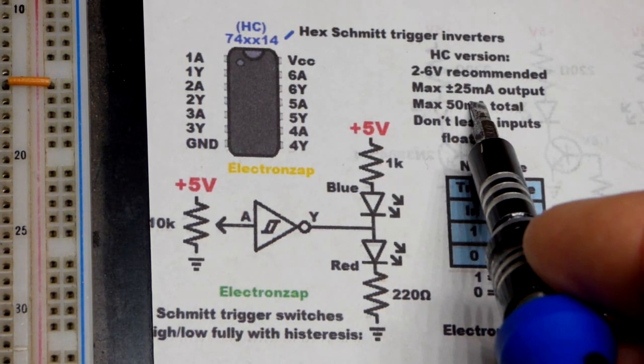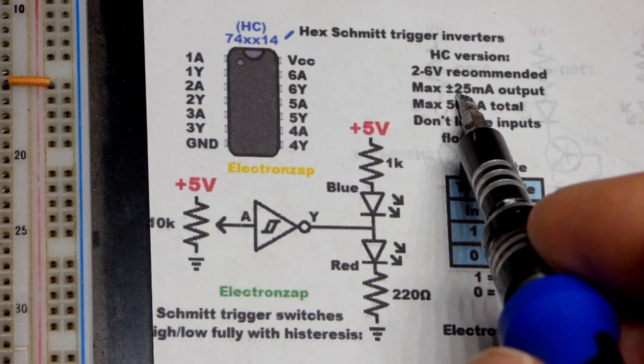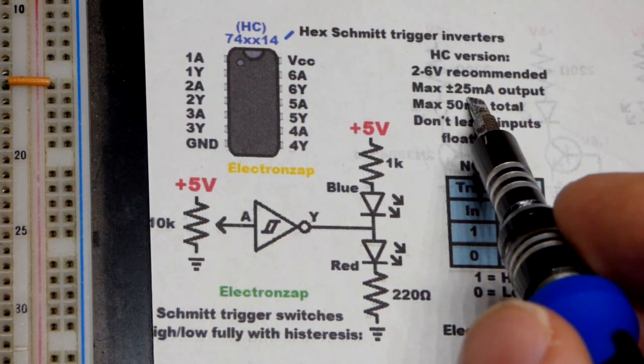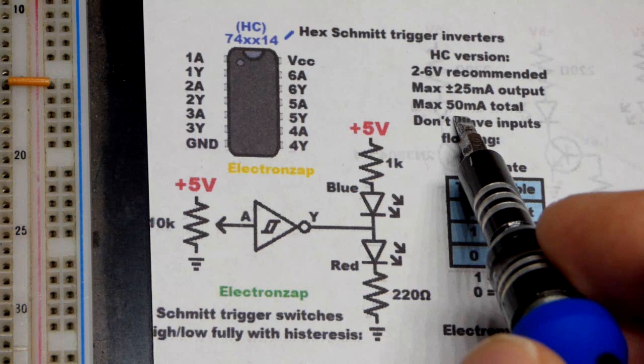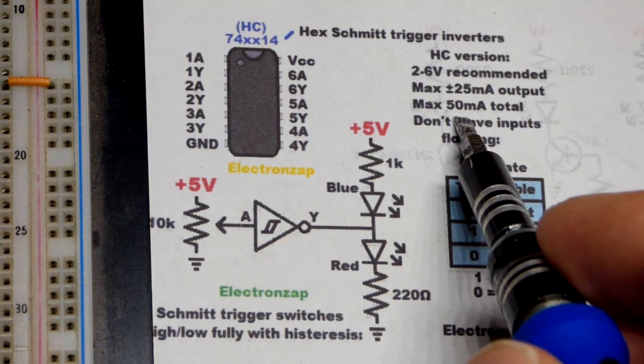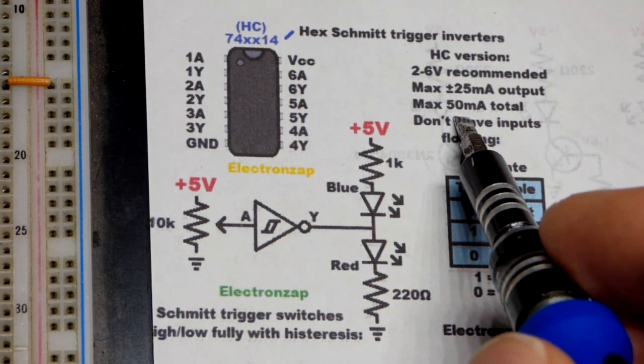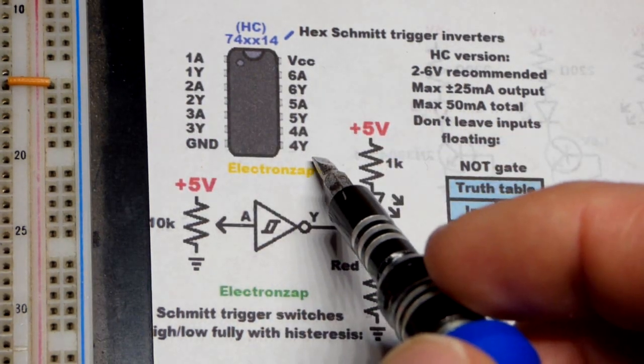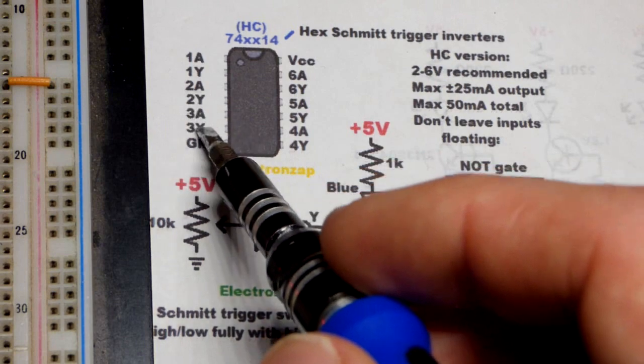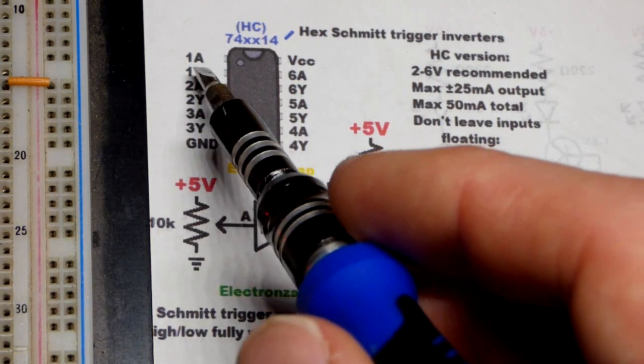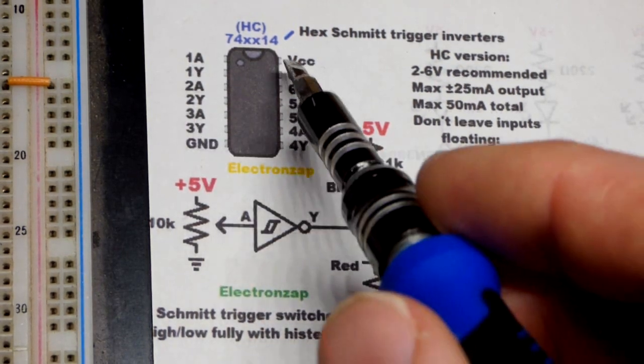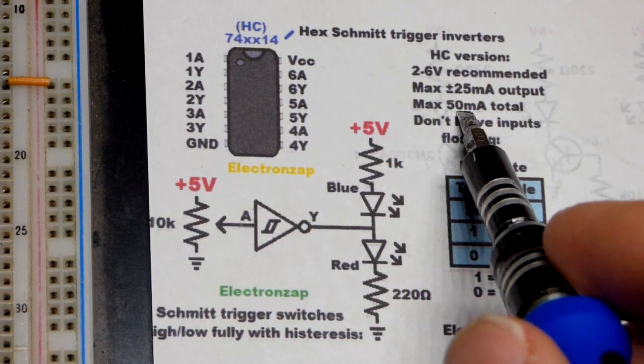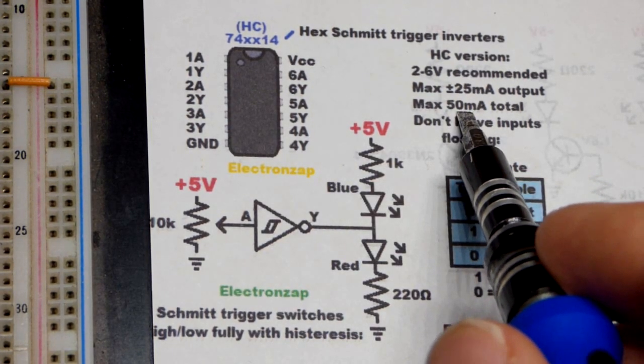We saw that with the and gate and the NAND gate in earlier videos. But that's a single output. Whereas the entire integrated circuit, you want to keep current limited to no more than 50 milliamps of current. So if you're using all six of these, you had all six of these sourcing and sinking current at the same time, you'd want to go less than 10 milliamps with each of them because 10 milliamps each would be 60. So you'd have to go even lower than that.